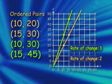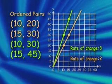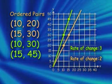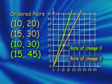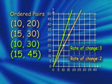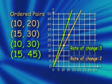The rate of change of the second line was $3, because the cost was $3 per ride. The greater rate of change is demonstrated by the greater steepness of the second line.